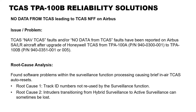Root cause analysis found software problems within the surveillance function processing, causing brief in-air auto-resets. There were two root causes identified. The first root cause was track ID numbers not being reused by the surveillance function. When the maximum track ID number of 255 was reached and the software tries to initiate a new intruder, no track ID number is available and a reset can occur.